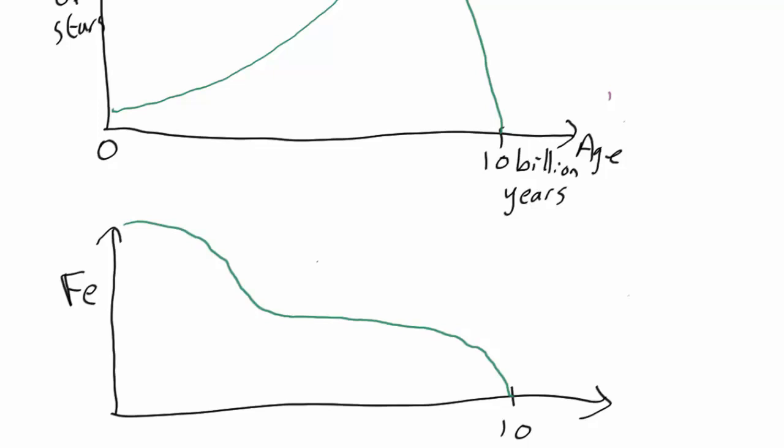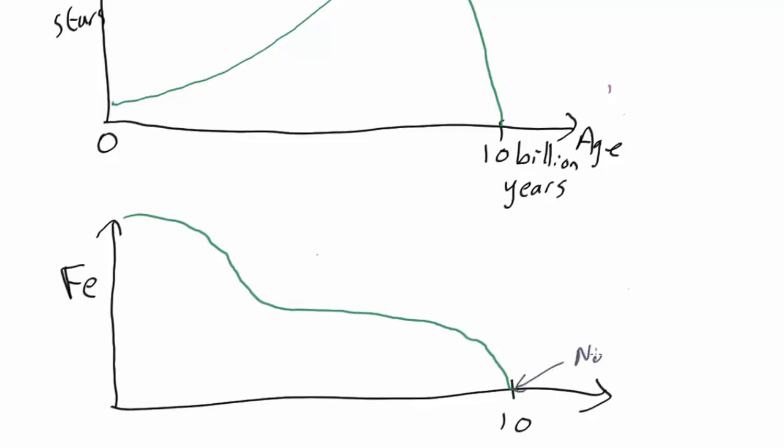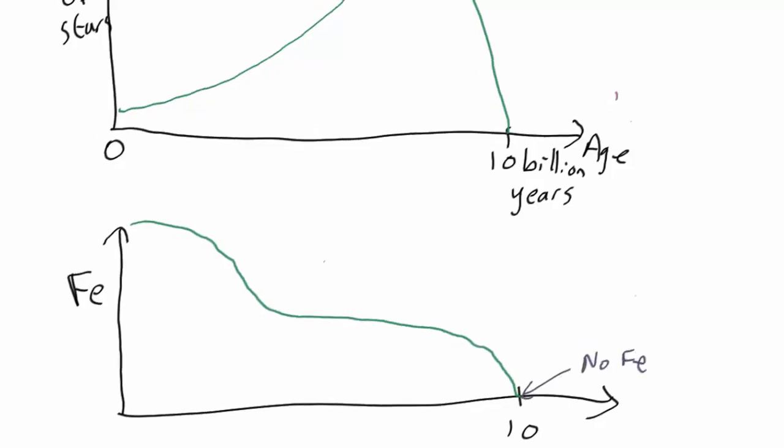Now what can we deduce from this? Well, what we can see is that very old stars have no iron, which is what you'd expect. These are the stars that were born out of the primordial gas from the Big Bang, which is just hydrogen and helium.